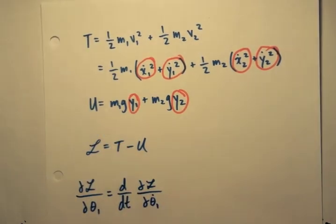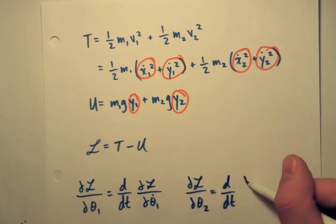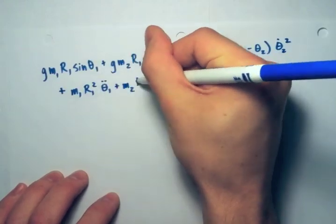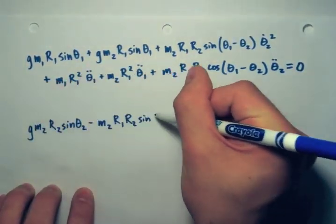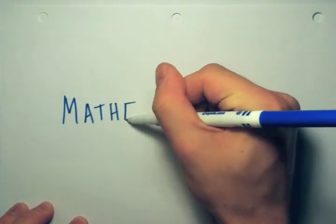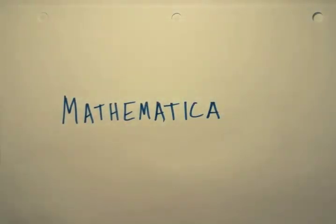Then the Euler-Lagrange equations on our generalized coordinates, theta 1 and theta 2, yields what you see right here. And then to solve these two differential equations, I will not do it by hand because it's impossible, so I will numerically solve them using Mathematica.